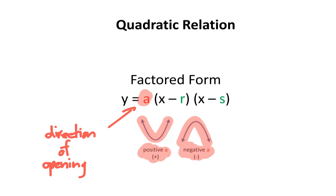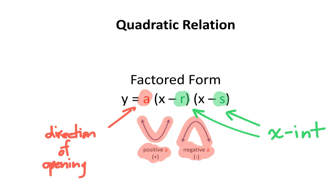The variables r and s are new — they represent the x-intercepts. However, determining the x-intercepts from an equation in factored form is a little bit tricky. I'll be showing you a shortcut instead.